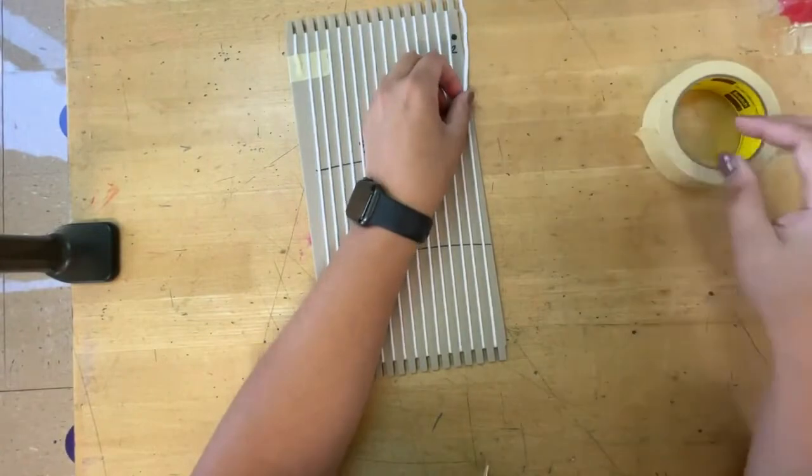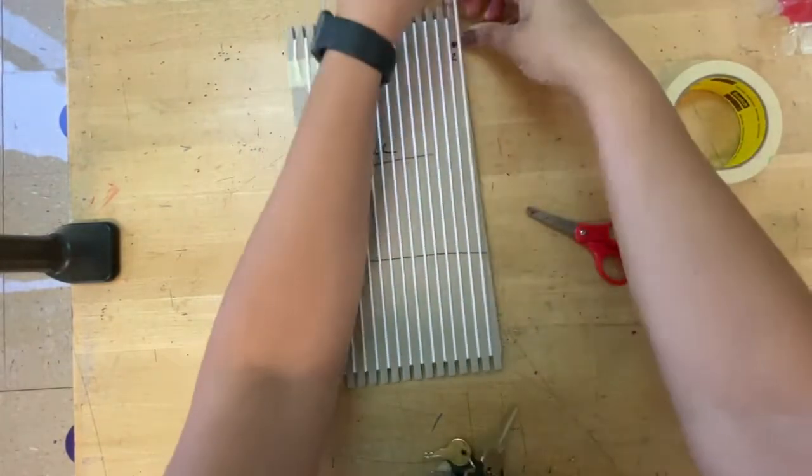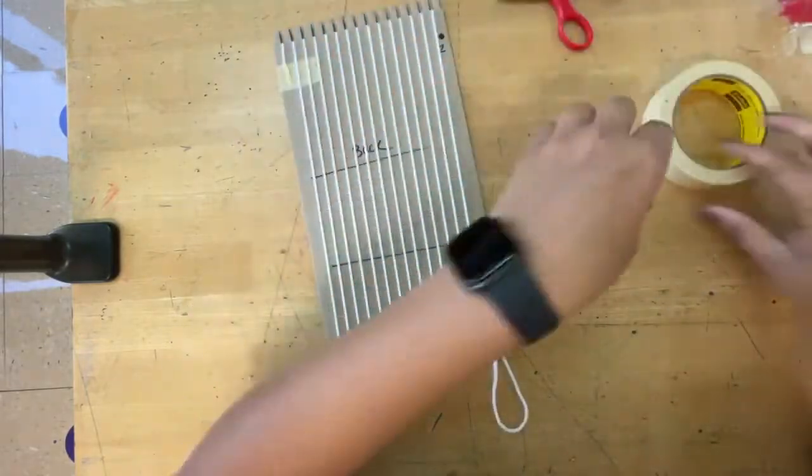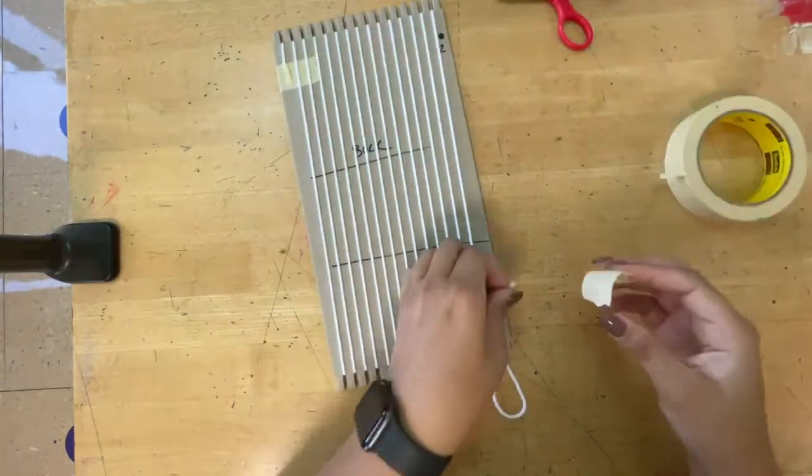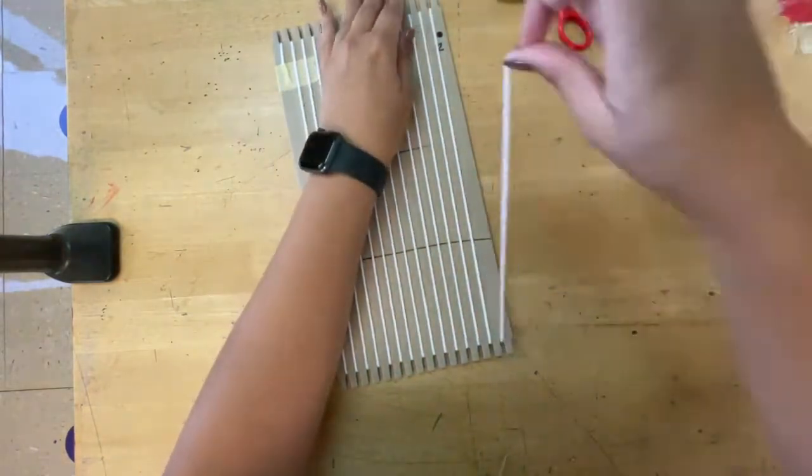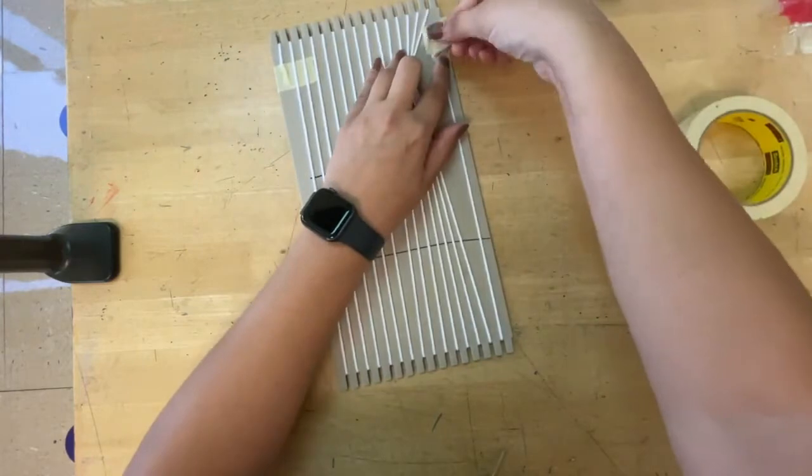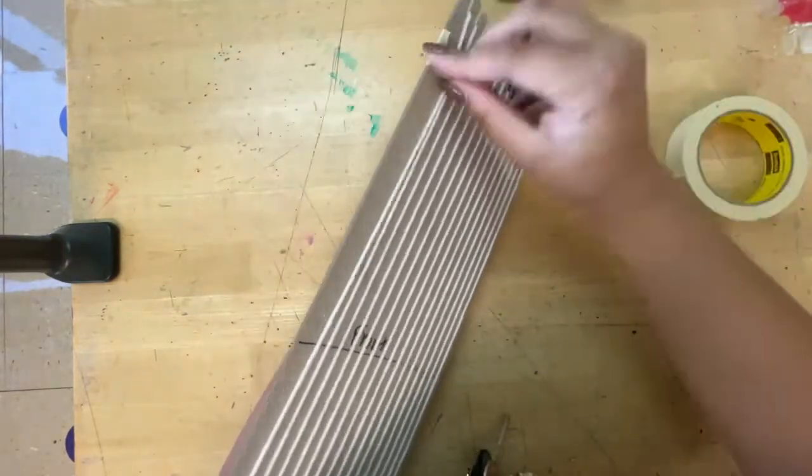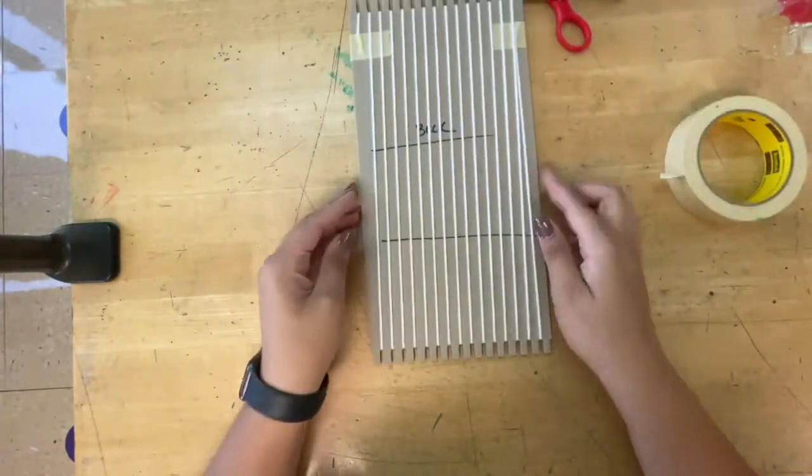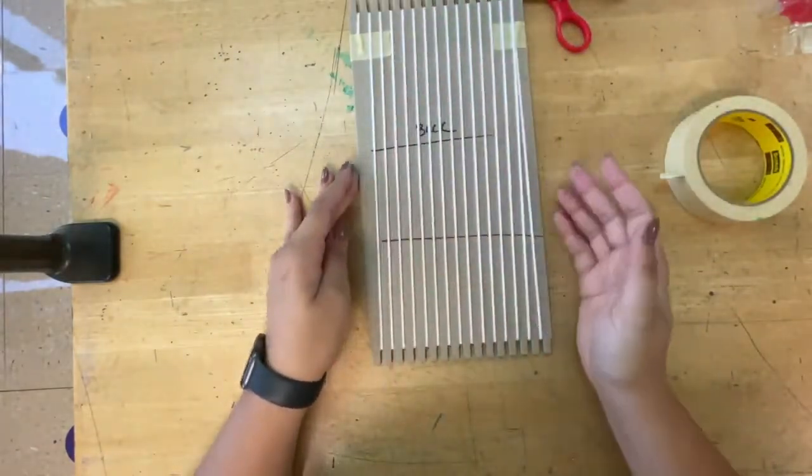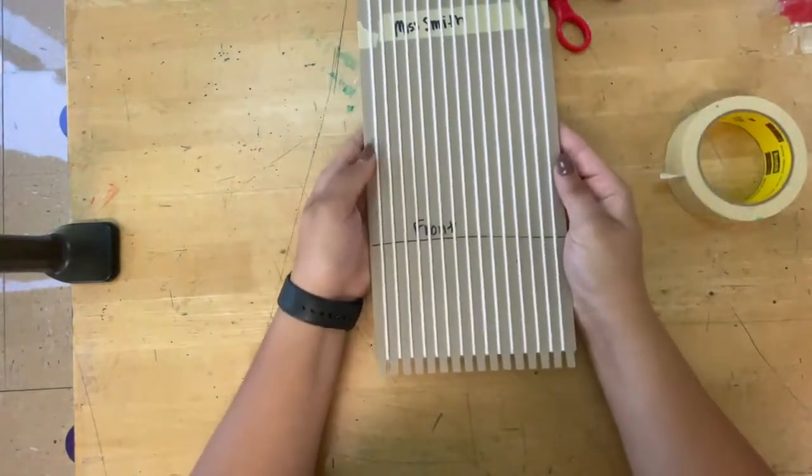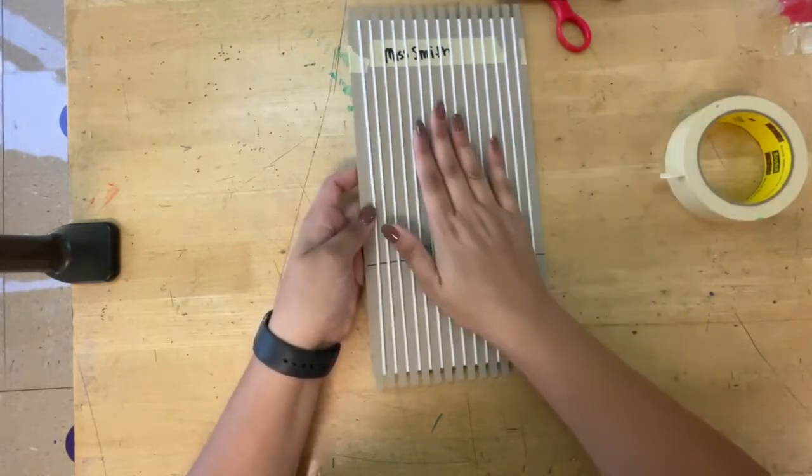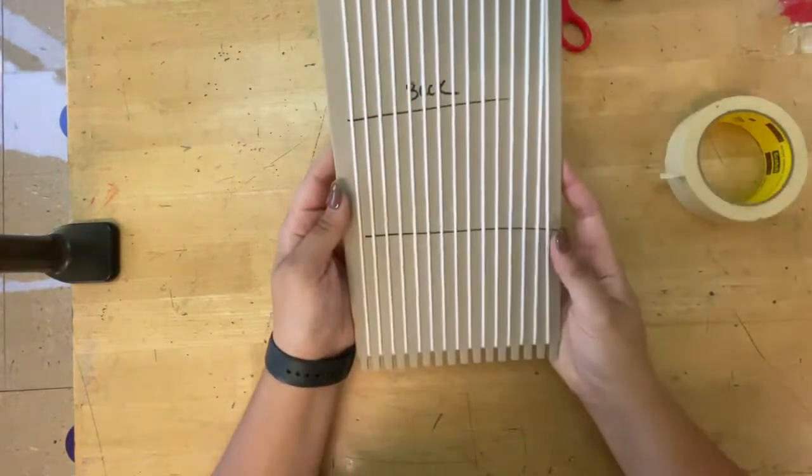When you are done, you are cutting and taping your string to dot number two. I'm going to cut a small one inch piece of tape, pulling pretty tight, and taping to dot two. You will see that the strings on the back are kind of tilted, but the strings on the front are completely parallel. This is what we want. We are going to be weaving on the front side. You are going to forget about the back.